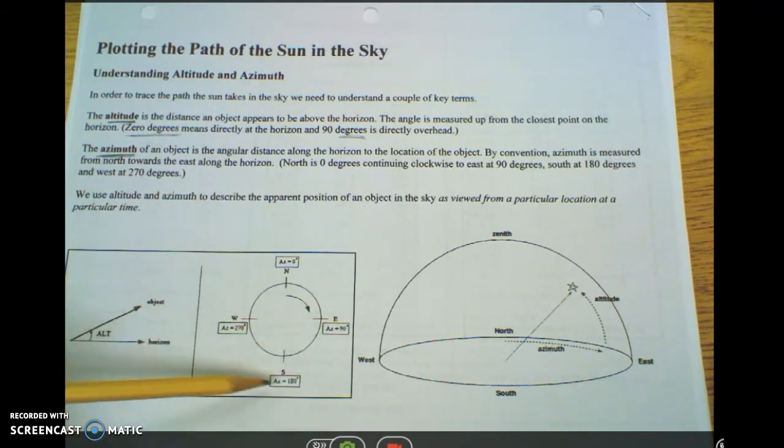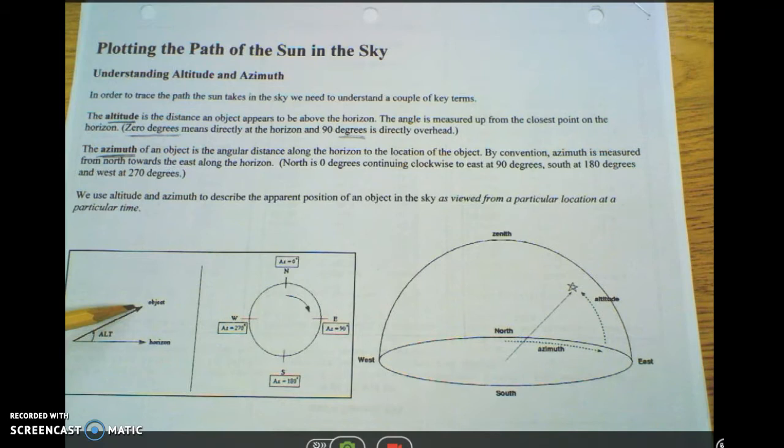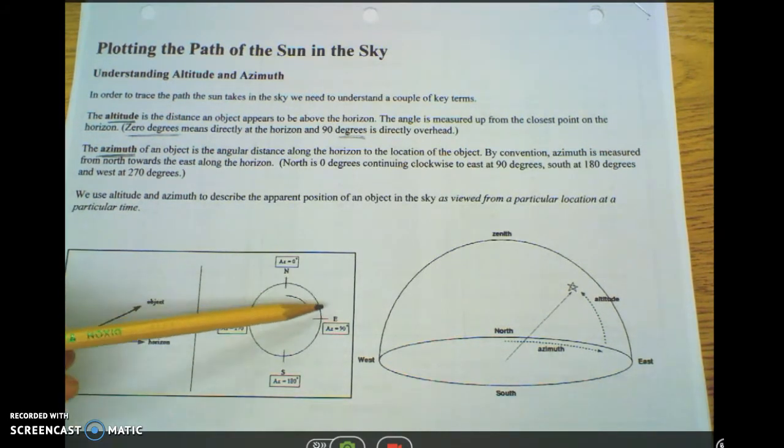And then you have all of the different numbers in between. So if you know the altitude, how high from the horizon the object is in the sky, and if you know the azimuth, its compass direction around a 360 degree circle, then you can track and plot the sun's path on a grid.